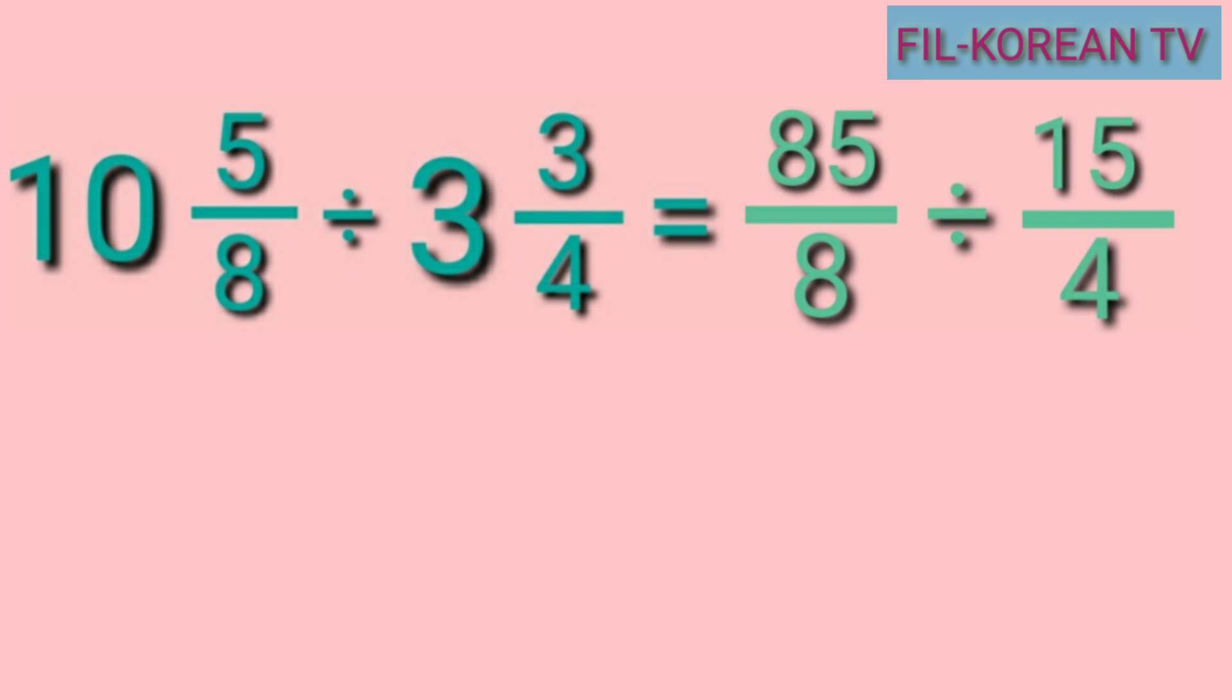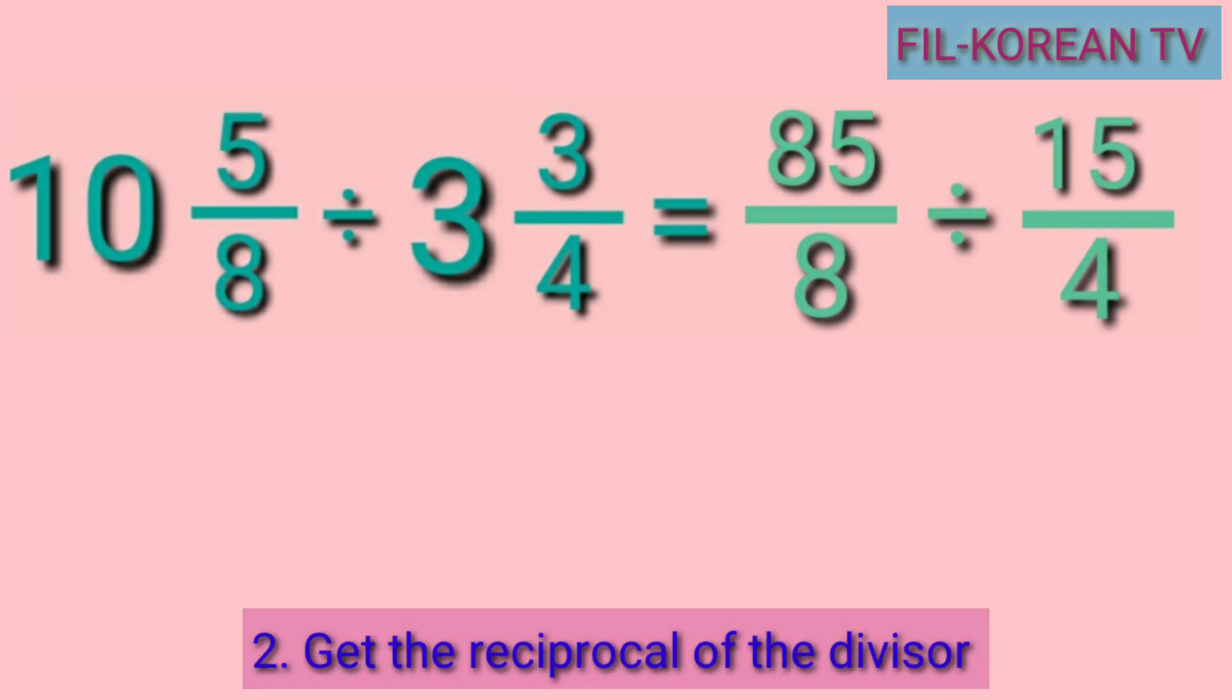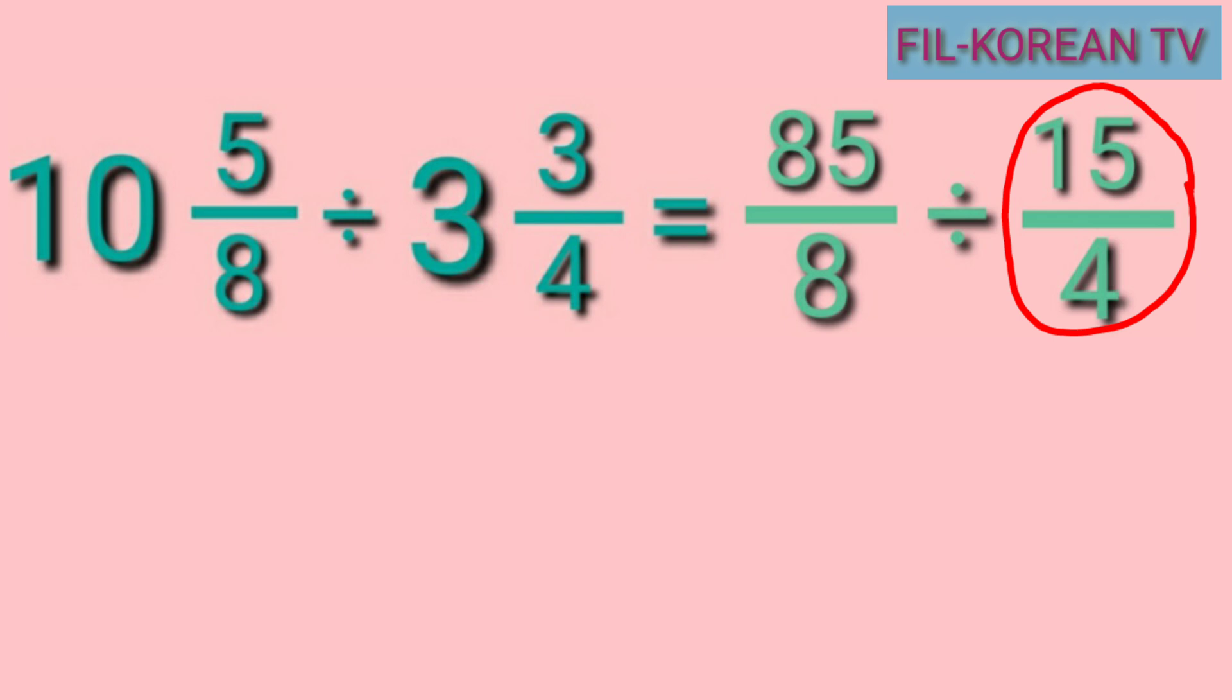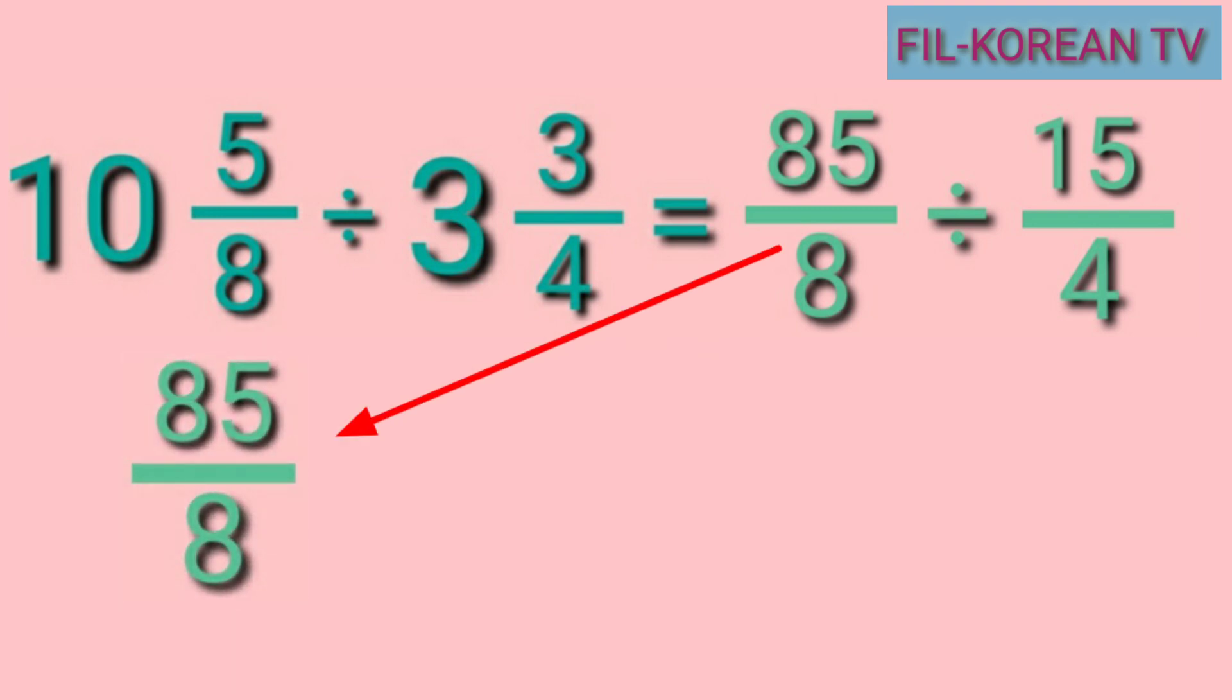The next step is to get the reciprocal of the divisor. The divisor is 15 fourths, so we will get its reciprocal. To get the reciprocal, just flip it or exchange the position of the numerator and the denominator. Let's copy 85 eighths and then write the reciprocal of 15 fourths. The reciprocal is 4 fifteenths.